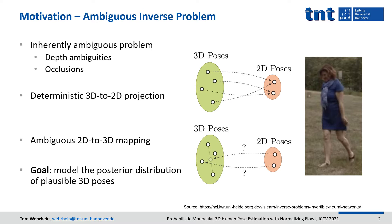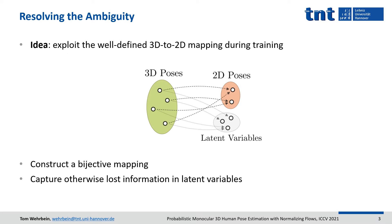In contrast, we want to embrace the reconstruction ambiguity and model the full posterior distribution of feasible 3D poses given an image. The core idea is to exploit the well-defined 3D to 2D mapping to solve the ambiguous 2D to 3D task. To do so, we construct a bijective mapping between a 3D pose and the combination of a 2D pose with a latent code.